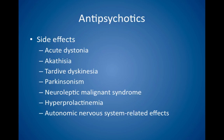Side effects of antipsychotics include acute dystonia, akathisia, tardive dyskinesia, Parkinsonism, neuroleptic malignant syndrome, hyperprolactinemia, and autonomic nervous system related effects. Acute dystonia can be treated with antihistamines or anticholinergics. Akathisia may be partially treated with a beta blocker. With tardive dyskinesia, switching to a new agent may be beneficial. Parkinsonism can be treated with antihistamines or anticholinergics. Hyperprolactinemia may cause breast discharge, menstrual dysfunction, and/or sexual dysfunction.